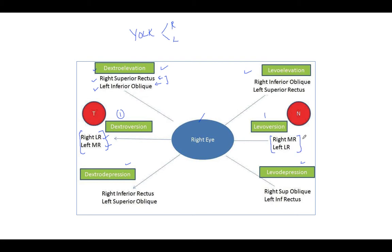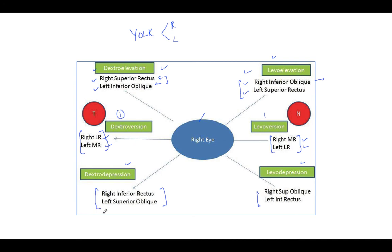For levo version, seeing left, the yoke muscles are the right medial rectus and the left lateral rectus. For levo elevation, the muscles involved are the right inferior oblique and the left superior rectus — both inferior oblique and superior rectus have elevation as their main action. For levo depression, the right superior oblique and left inferior rectus are involved. For dextro depression, the right inferior rectus and left superior oblique are involved.